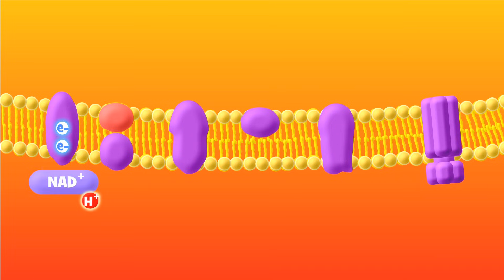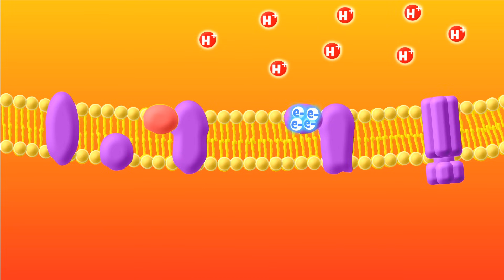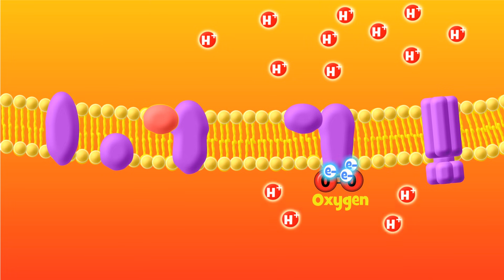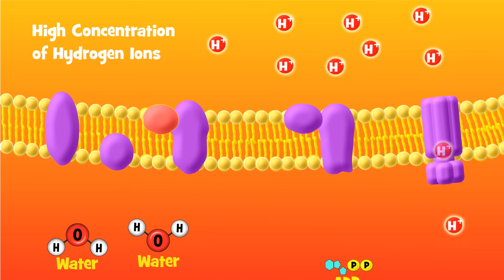All of the steps of aerobic respiration that we have done so far have been leading up to this, the electron transport chain. This is the main event, the big bonanza, the Super Bowl of cellular respiration. Why? Because the vast majority of our ATP is made here.